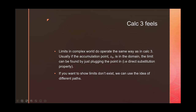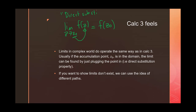We're going to proceed from a Calc 3 perspective for computing limits. If we're taking the limit as Z approaches Z naught of F of Z, and Z naught is in the domain of F, usually we can just plug it into the function and call it a day. We call this the direct substitution property.